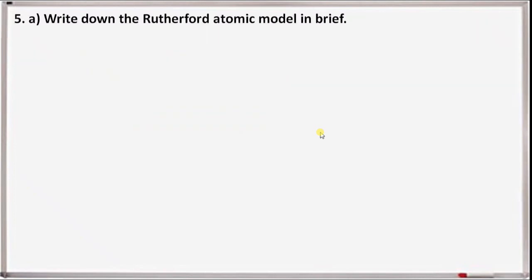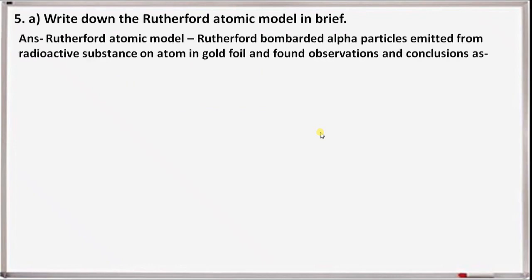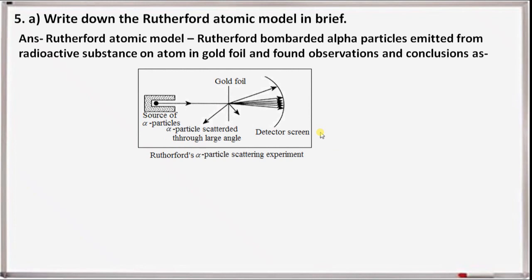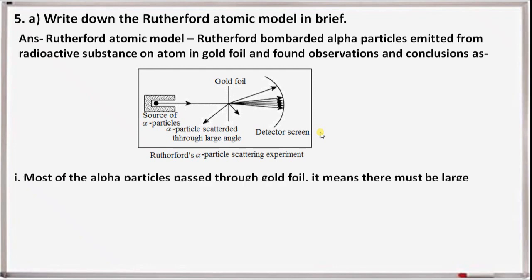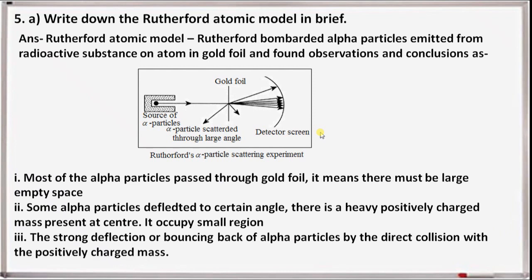Next question 5a: write down the Rutherford atomic model in brief. Rutherford bombarded alpha particles from a radioactive substance onto a gold foil and made the following observations and conclusions: most alpha particles passed through the gold foil, meaning there is large empty space in the atom. Some alpha particles were deflected at certain angles, indicating a heavy positively charged mass at the center. Strong deflection or bouncing back of alpha particles occurs due to direct collision with the positively charged nucleus.